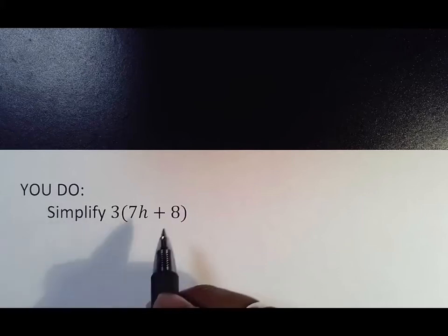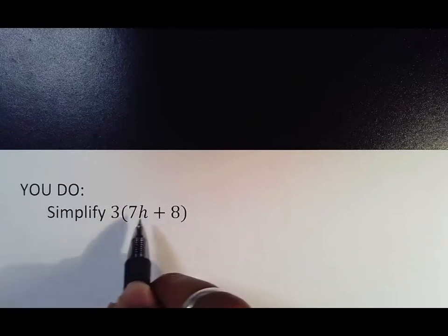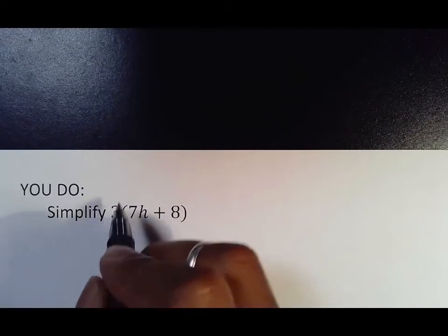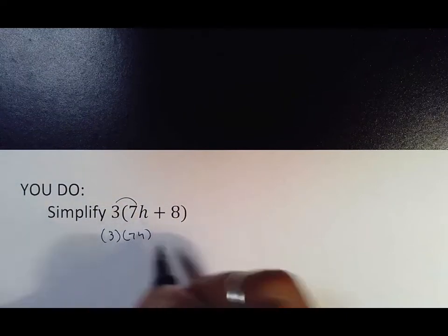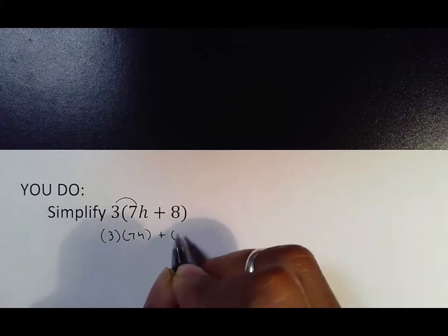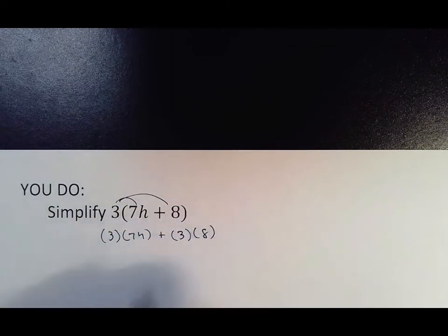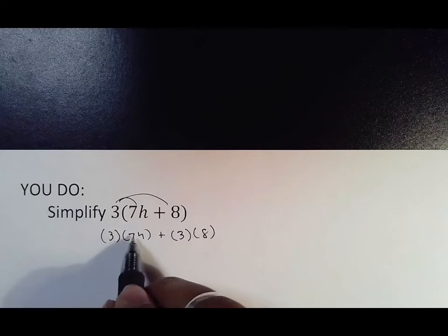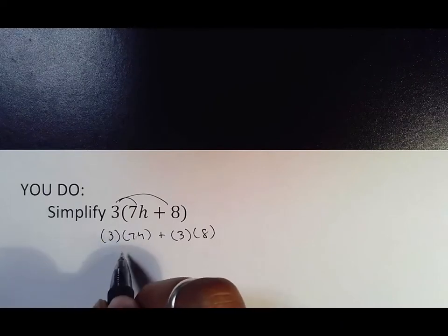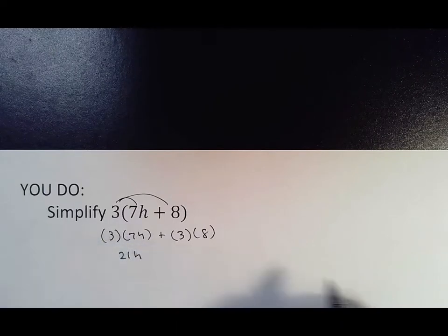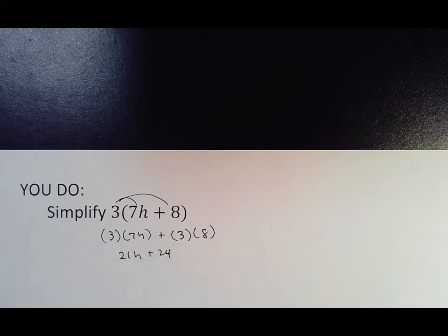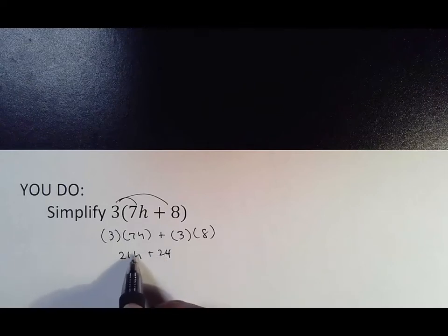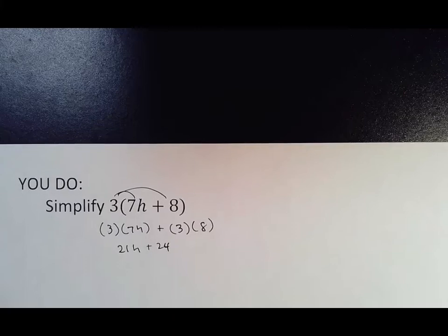I'm going to go over it now. In this problem, 7h and 8 are the inside terms, and 3 is the outside term. We say that 3 meets 7h, and because we always use a plus, 3 meets 8. Three times 7h—you multiply the numbers—so 21h. Three times 8 is 24. That's all. Can't put these together because one has an h and the other doesn't.